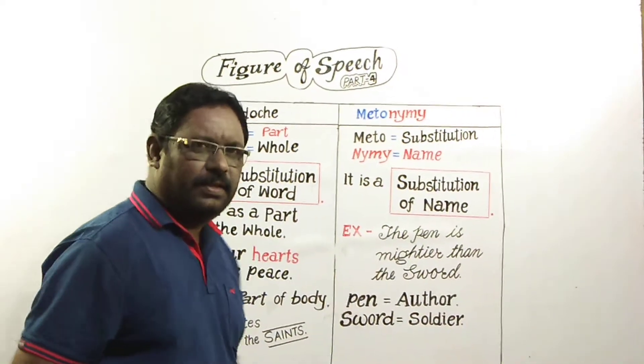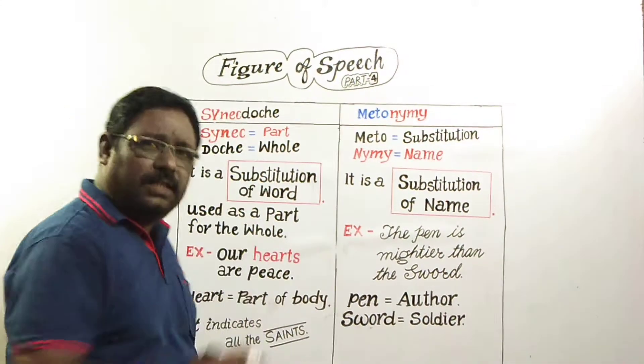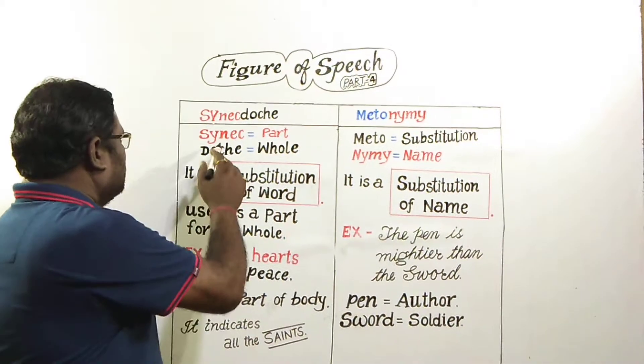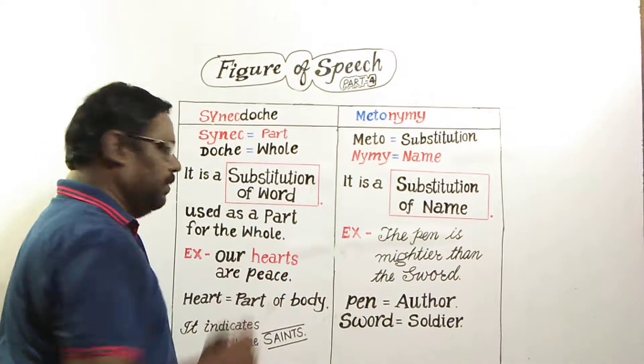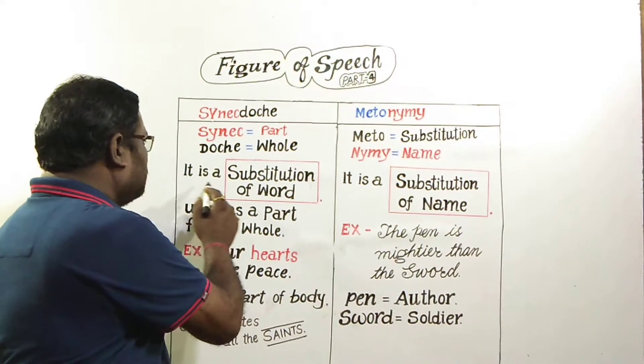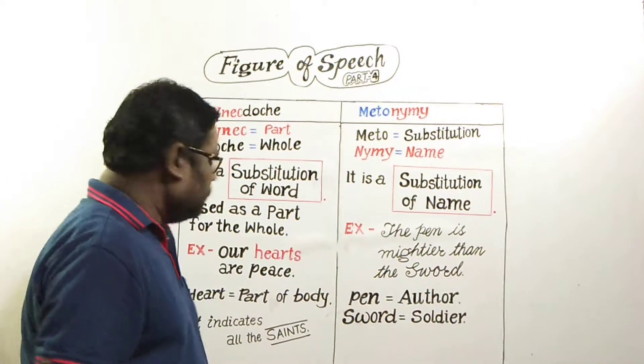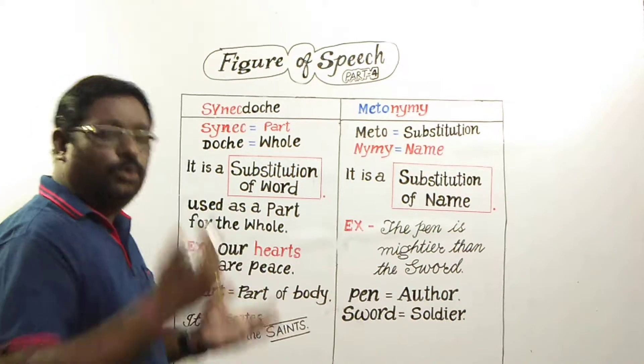Let's see Metonymy and Synecdoche. Synecdoche, 'syn' means part and 'doche' means whole. It is a substitution of word used as a part for the whole.